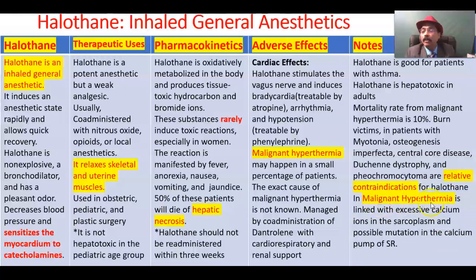Regarding malignant hyperthermia: the reason is excessive calcium ions in the sarcoplasm — the cytoplasm of the skeletal muscle. This occurs due to a mutation in the calcium channel of the smooth endoplasmic reticulum, causing uncontrolled calcium release and the resulting hyperthermia.